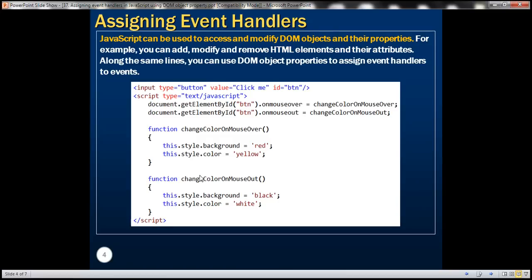We can use JavaScript to access and modify DOM objects and their properties. For example, we can use JavaScript to add, modify, and remove HTML elements within the DOM and even change their attributes. Along the same lines, we can also use DOM object properties to assign event handlers to events.